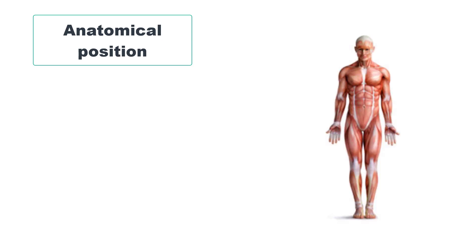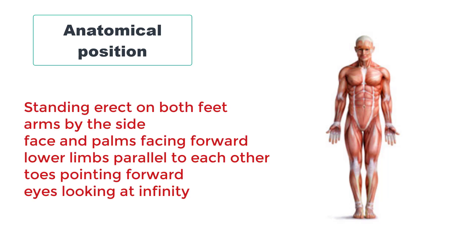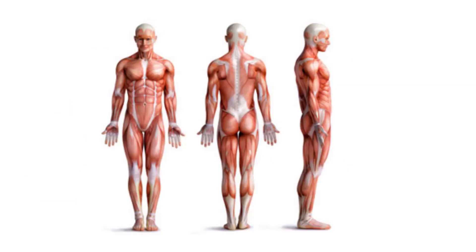So what is the anatomical position of the body? It is the human body standing erect, arms by the side, face and palms facing forward, lower limbs parallel to each other, toes pointing forward, and eyes looking at infinity. All body structures and their relationships to each other are described in relation to the body being in anatomical position.